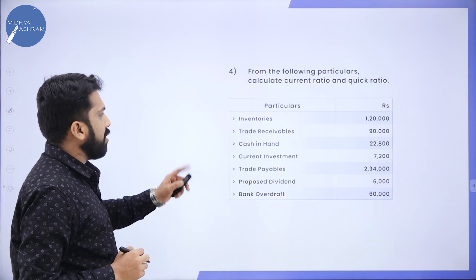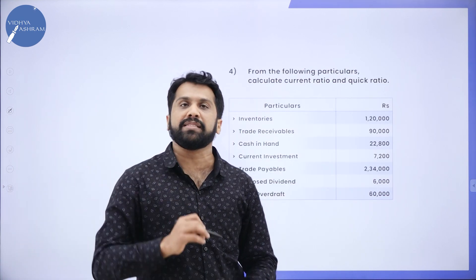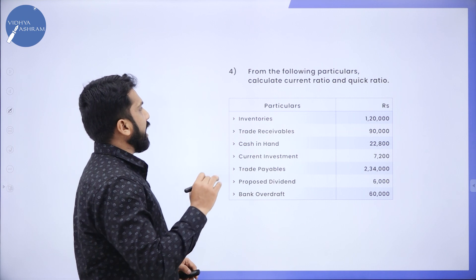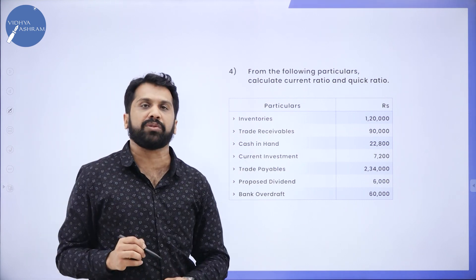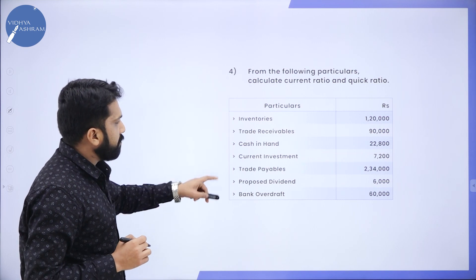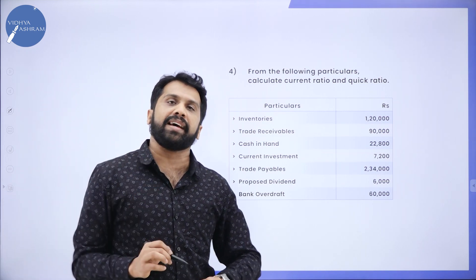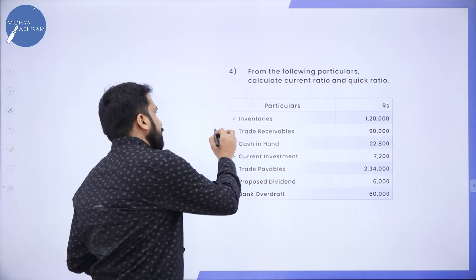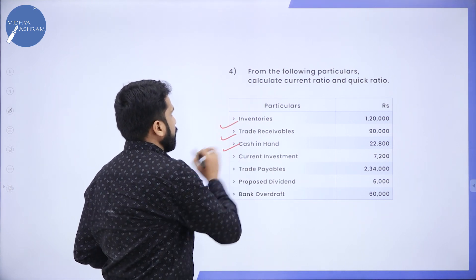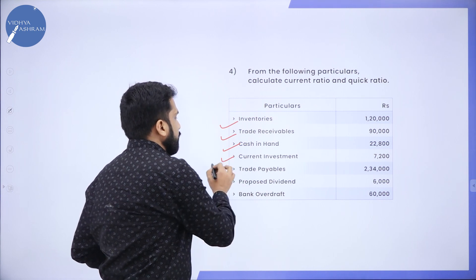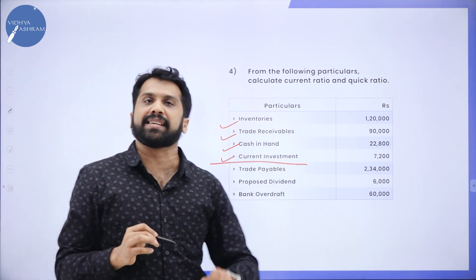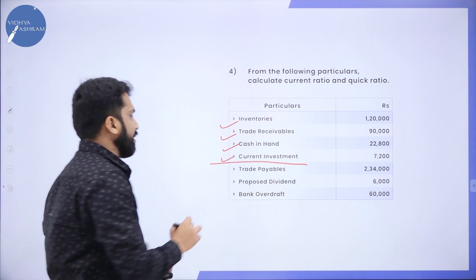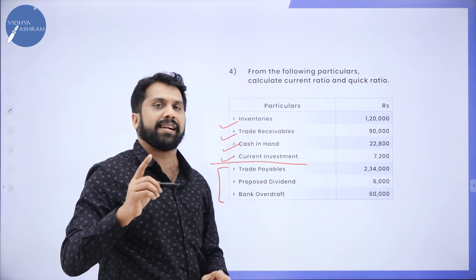We'll go for the last problem on Liquidity Ratio, covering Current Ratio as well as Quick Ratio. From the following particulars, calculate Current Ratio and Quick Ratio. Identify which are Current Assets and which are Current Liabilities. Inventory, trade receivable, cash in hand, and current investment — up to this, we call them Current Assets. Trade payable, proposed dividend, and bank overdraft — these three are called Current Liabilities.